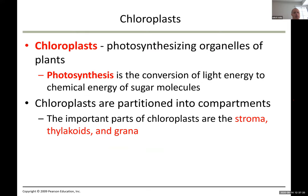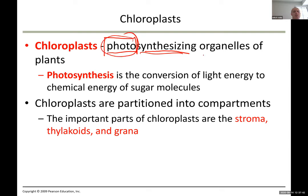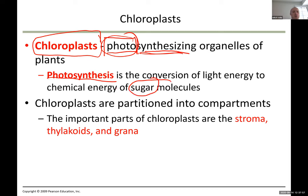The next organelle is the chloroplast, also involved in energy production but through a different process. Chloroplasts are involved in photosynthesis — photo means light. They take light and turn it into chemical energy. Basically, chloroplasts take light and turn it into sugar — that is what photosynthesis is.